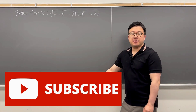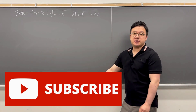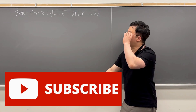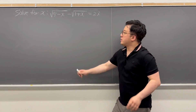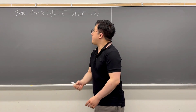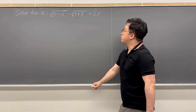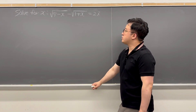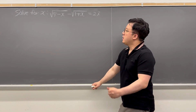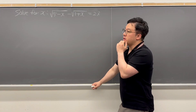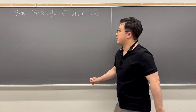This question was suggested by my friend U.S. Descartes on Twitter. The question is: solve for x, where the square root of (5 minus x) minus the square root of (1 plus x) is equal to 2i. For this question, first of all, we need to square the left and right-hand side.